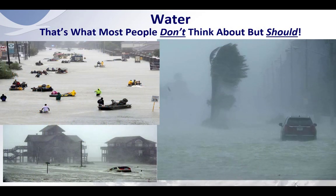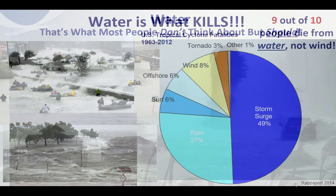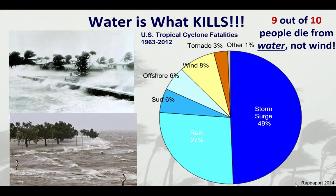Well, water — that's what most people don't think about, but that's what you really should be thinking about. Water is what kills. In the chart below of tropical cyclone fatalities, you can see storm surge accounts for about 49% of fatalities, while rain — that inland flooding threat — accounts for about 27%. You can see wind up there in the upper left is only about 8%.